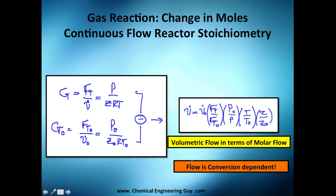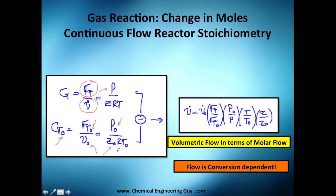By definition, the total concentration C_T equals the total molar flow rate F_T divided by the total volumetric flow rate v. This equals pressure P divided by zRT — that's how you calculate concentration at any moment. At the beginning, you add a subscript zero: F_T0 divided by v0 equals P0 divided by z0 R T0.